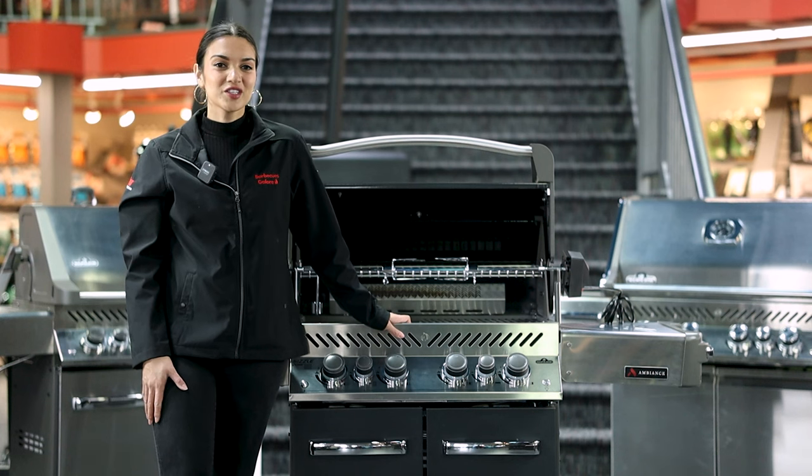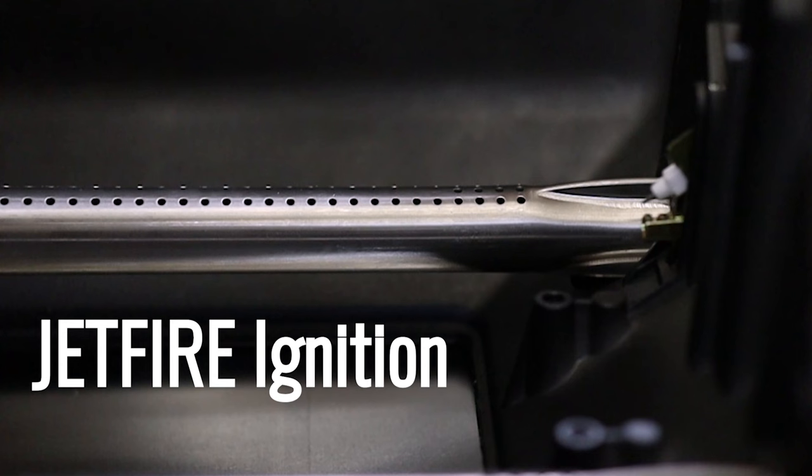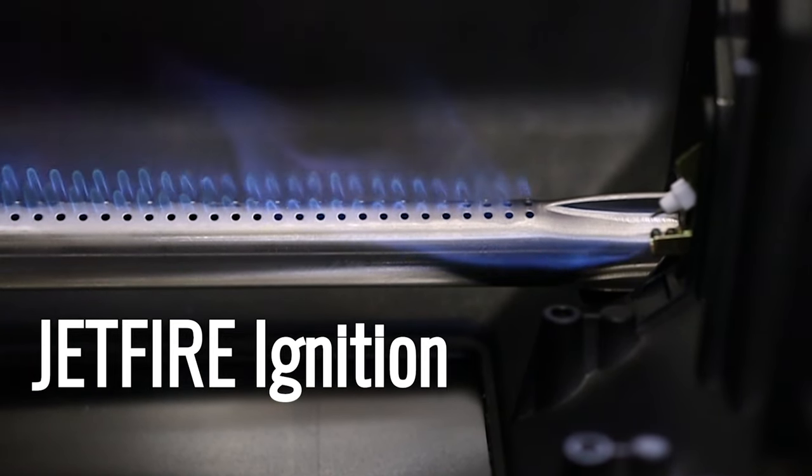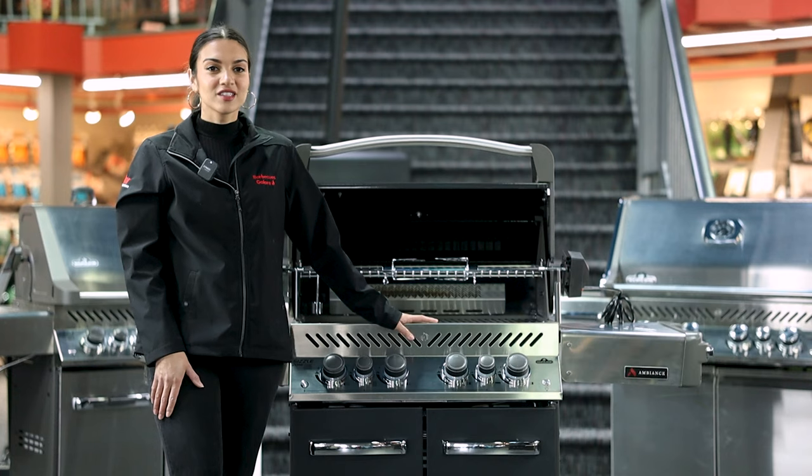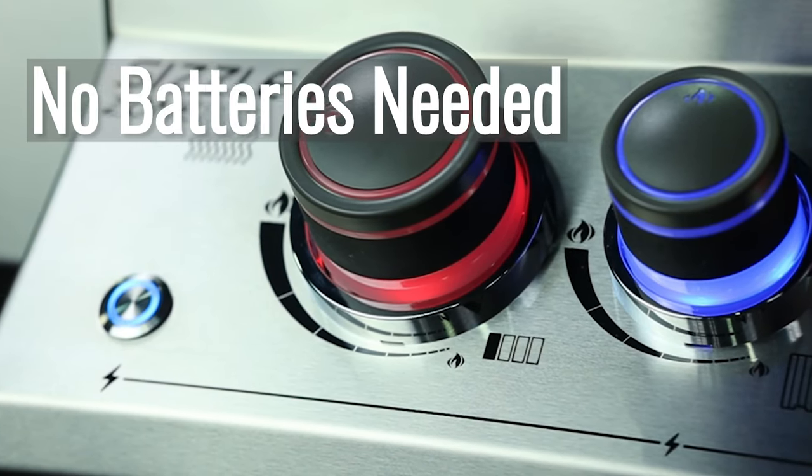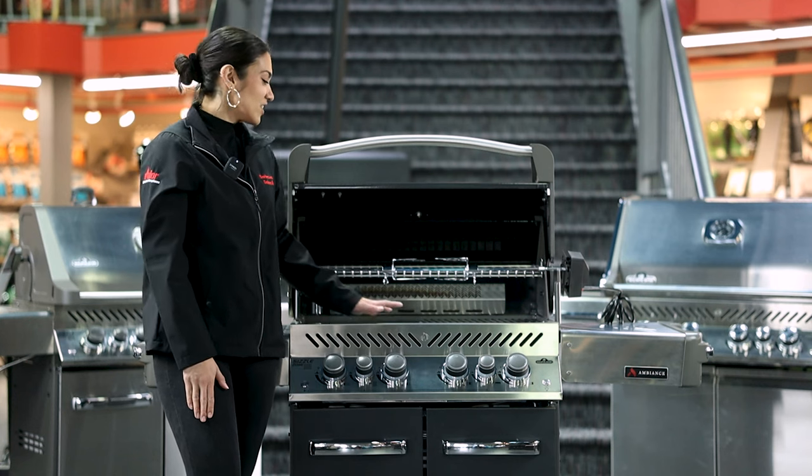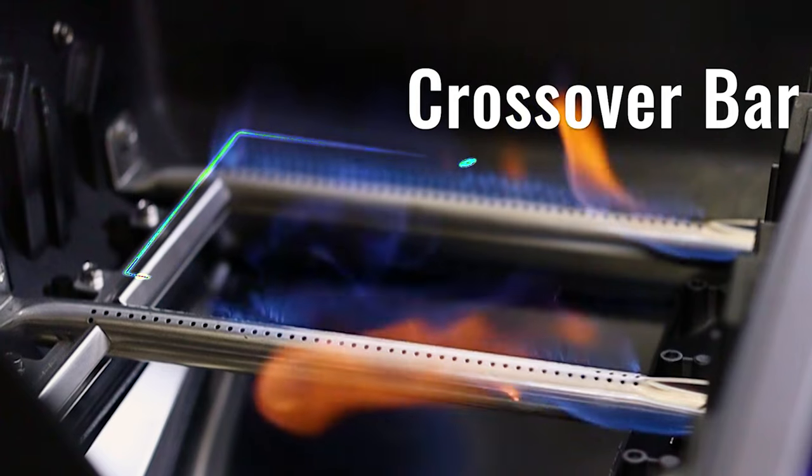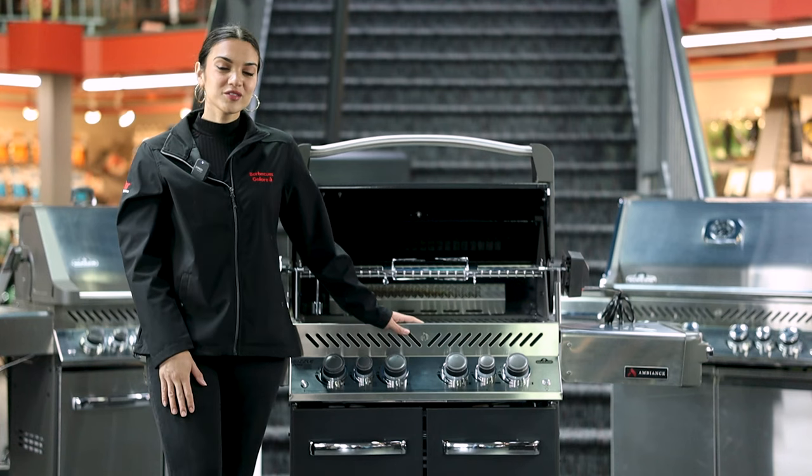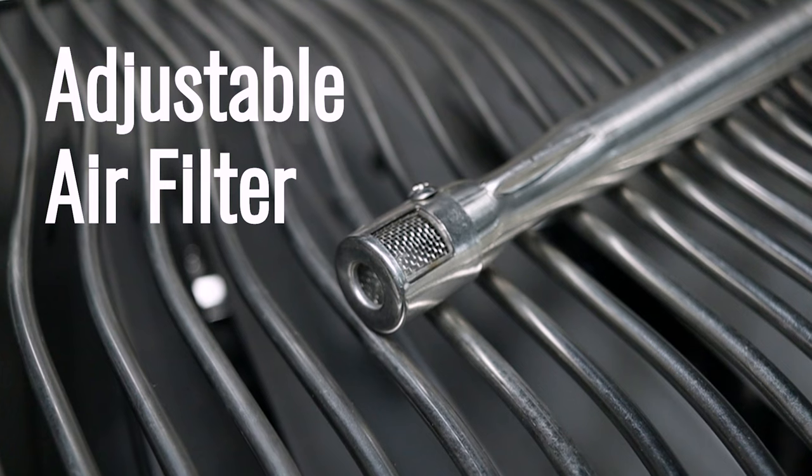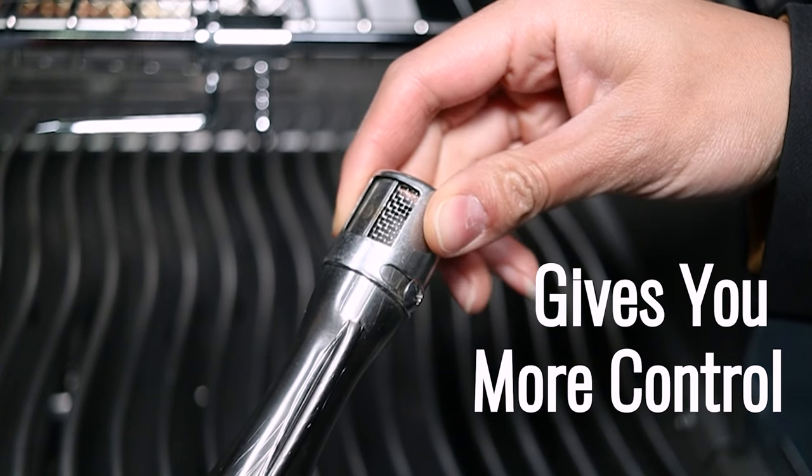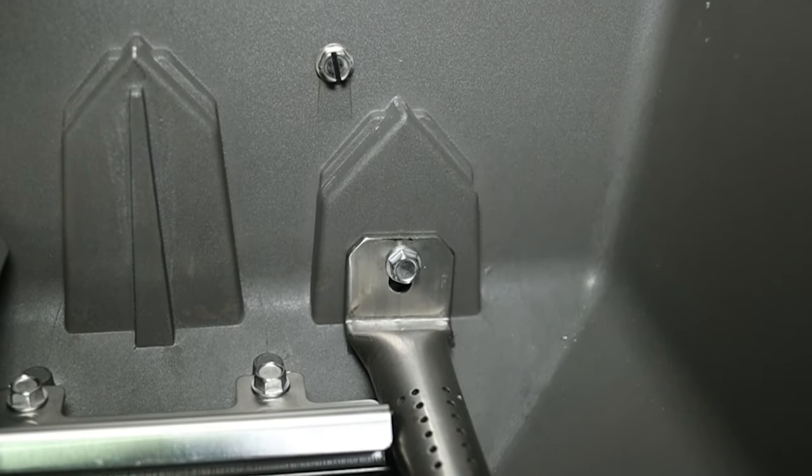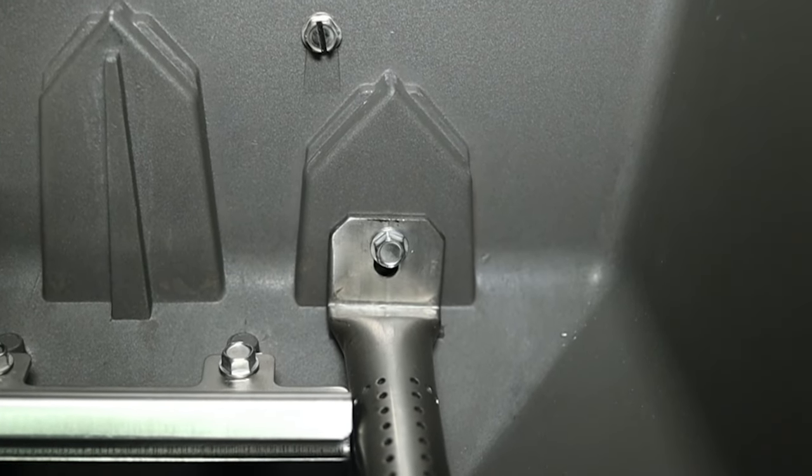Each burner lights quickly and efficiently through Napoleon's jet fire ignition system. This innovative ignition shoots a jet of flame individually to each burner, allowing for more dependability. This ignition system requires no batteries. Another layer of reliability, Napoleon features cross burners, which allows fuel to travel across burners that for some reason might not be working. Napoleon's burners also feature an adjustable air filter. This air filter gives you the ability to allow more or less air into the burner, being able to adjust the flame. You can access the air filter by unscrewing the burner from the cookbox.